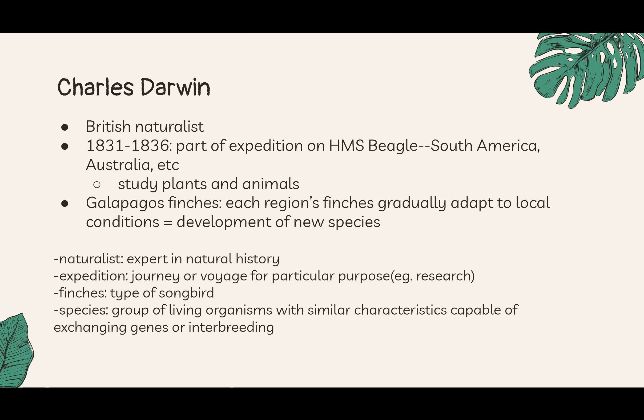A naturalist is an expert in natural history, which is what Darwin was. An expedition is a journey or voyage for a particular purpose — in this case, scientific research. Finches are a type of songbird. Species is a group of living organisms with similar characteristics that are capable of exchanging genes or interbreeding — for example, humans are a species, and dog breeds like chihuahua or golden retriever are also species.